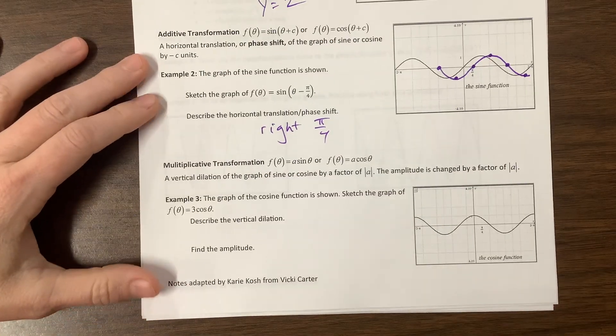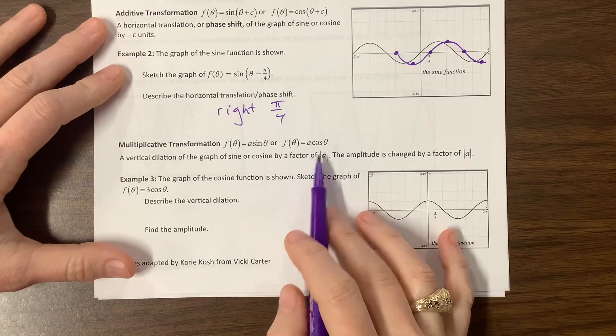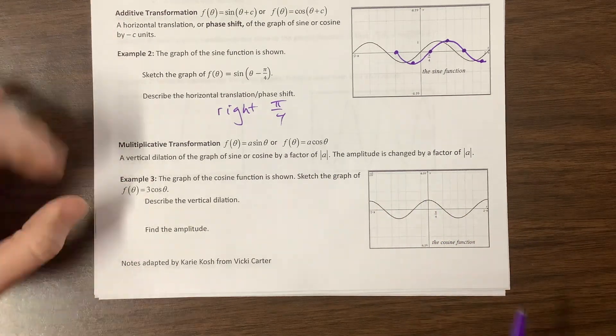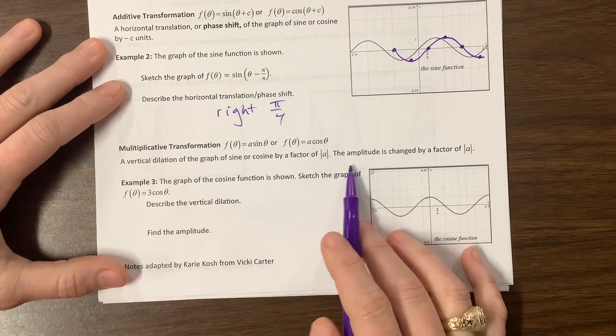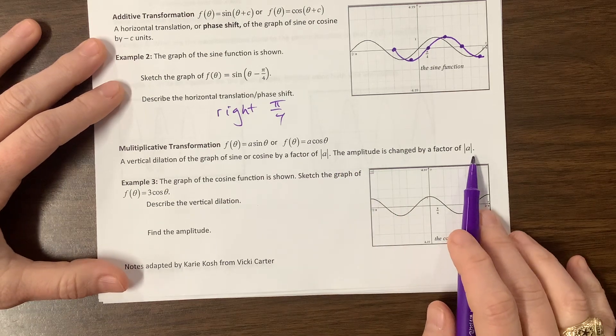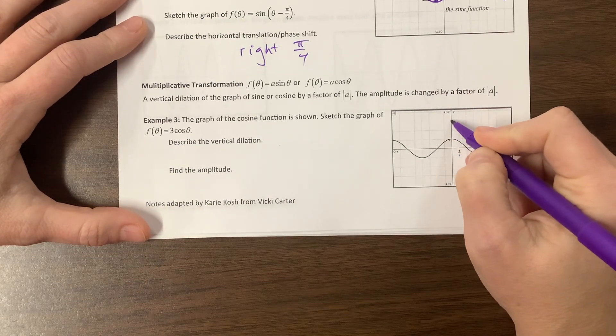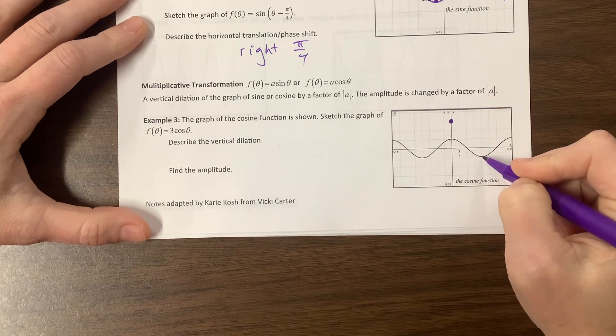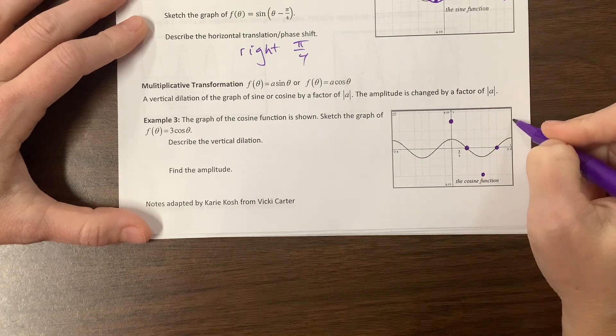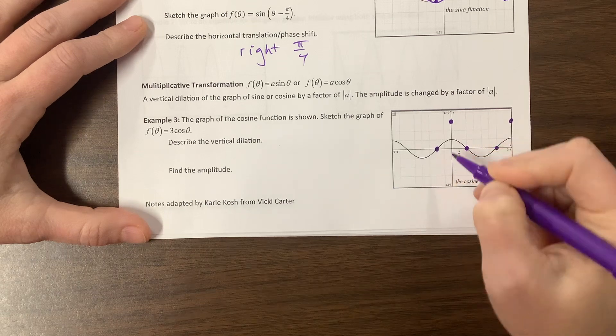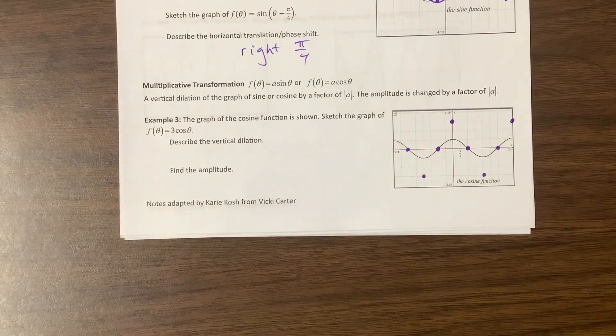Okay, then we can do a multiplicative transformation. That's fun to say. Basically, we have a times sine theta, or a times cosine theta. Or later, we'll see a times the other trig functions. And it's a vertical dilation by the factor of the absolute value of a. So what I like to remember is just that the amplitude is now the absolute value of a. Okay, so sketch the graph of 3 cosine theta. So what was at 1 now goes up to 3 to here. What was at negative 1 now goes, this is negative 1, negative 2, negative 3. But what's at 0 stays. So it did not change our period.